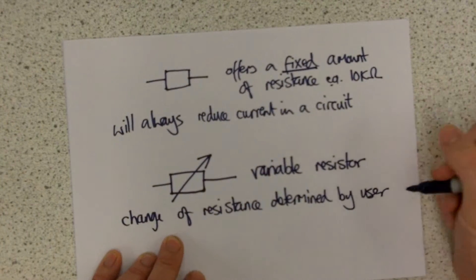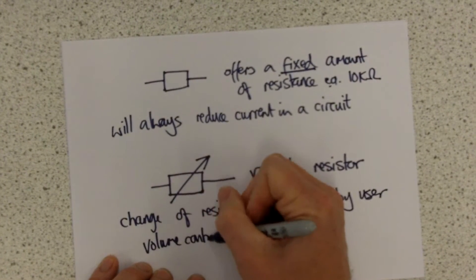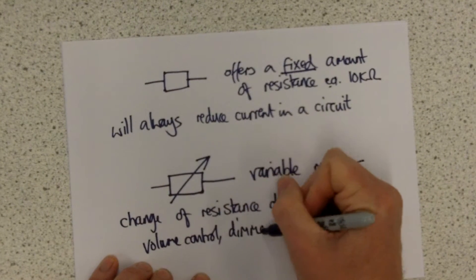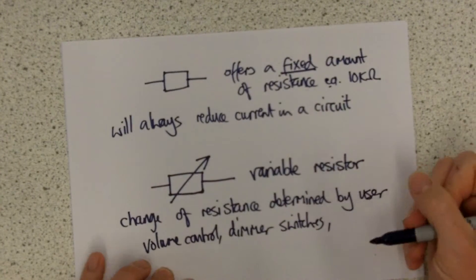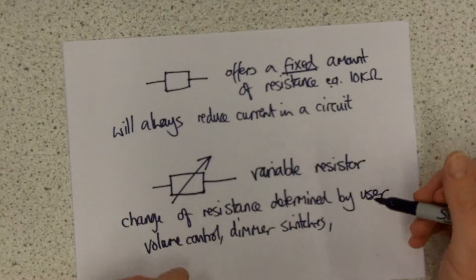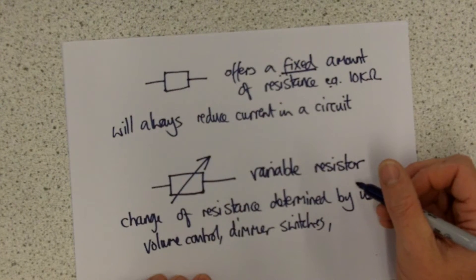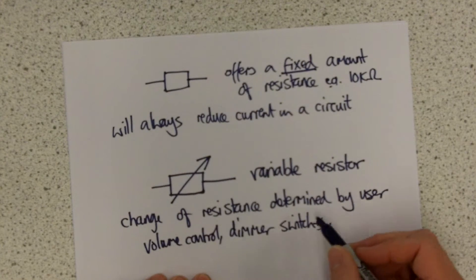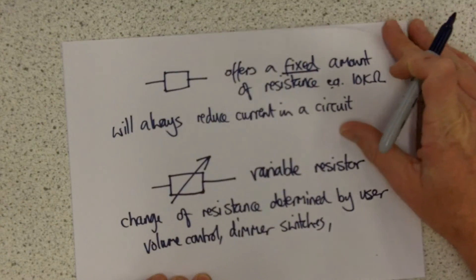This kind of thing is used in volume controls and dimmer switches. If you had an electric car, the accelerator pedal is likely a variable resistor to allow more or less current to go to the motor. So if you want to change the current in a variable way, you can use a variable resistor which offers different levels of resistance.